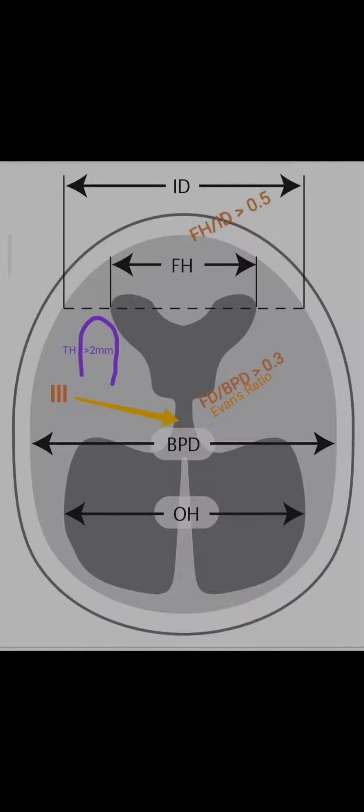How to diagnose hydrocephalus on CT or MRI. Key features include dilatation of the temporal horn more than 2 mm, and ballooning of the frontal horn.